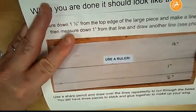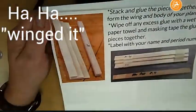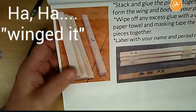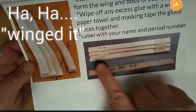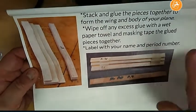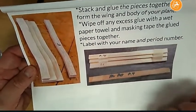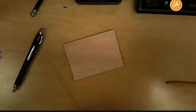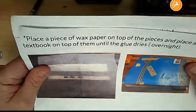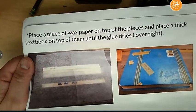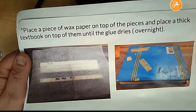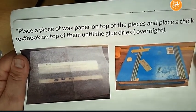I sort of just winged it from that point on, but in the instructions here it shows you how to stack these pieces up and tape them and put your name on them. Wipe off any extra glue with a wet paper towel, masking tape them together. I think over here it says something about putting a piece of wax paper on top of them and putting a thick book on them until the glue dries, which is usually overnight.